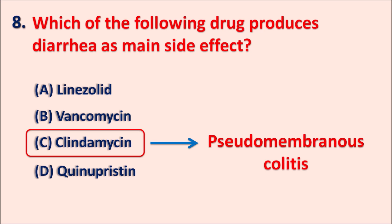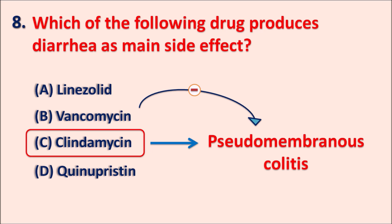Clindamycin-induced diarrhea can be controlled by vancomycin, which can control pseudomembranous colitis. Alternatively, we can use other anti-diarrheal agents like metronidazole. So either vancomycin or metronidazole can be used to control clindamycin-induced diarrhea.